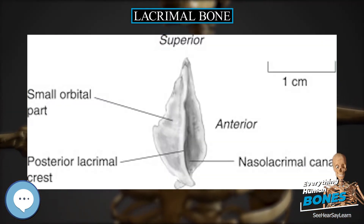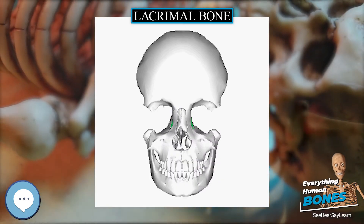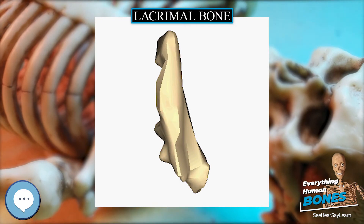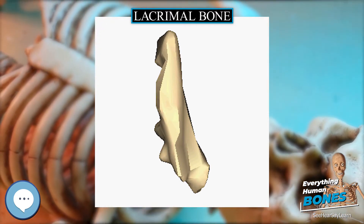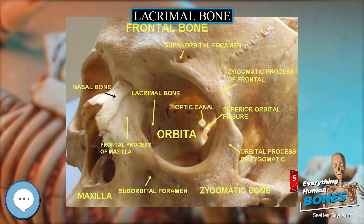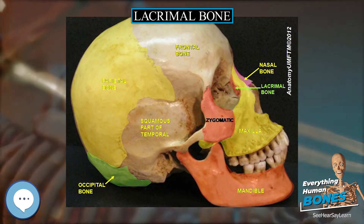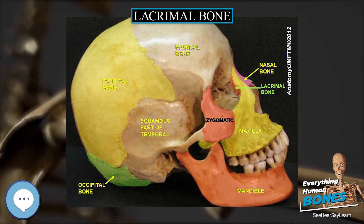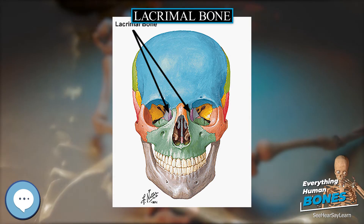The hamulus sometimes exists as a separate piece and is then called the lesser lacrimal bone. The medial or nasal surface presents a longitudinal furrow corresponding to the crest on the lateral surface. The area in front of this furrow forms part of the middle meatus of the nose. The area behind it articulates with the ethmoid and completes some of the anterior ethmoidal cells.